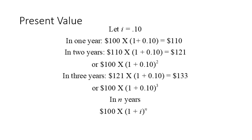If we deposit this for a second year, the principal becomes $110 multiplied by (1 plus 10%) for interest, so by the end of the second year we have a total of $121. We can simplify this by noting that (1 plus the interest rate) is a common factor repeated two times, so we can write it as 100 times (1 plus interest rate) squared, or 100 times (1 plus 10%)².